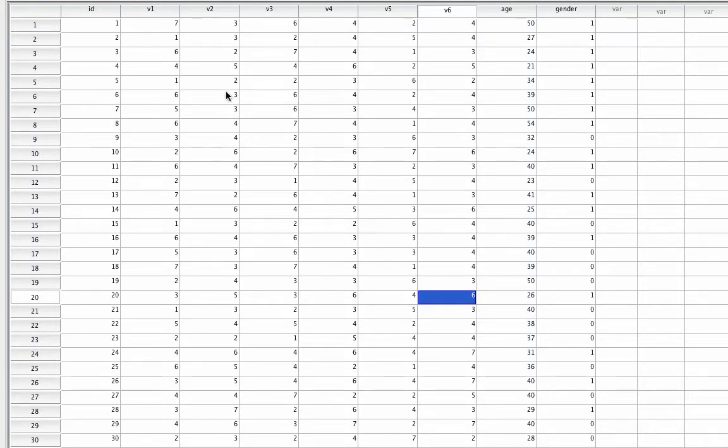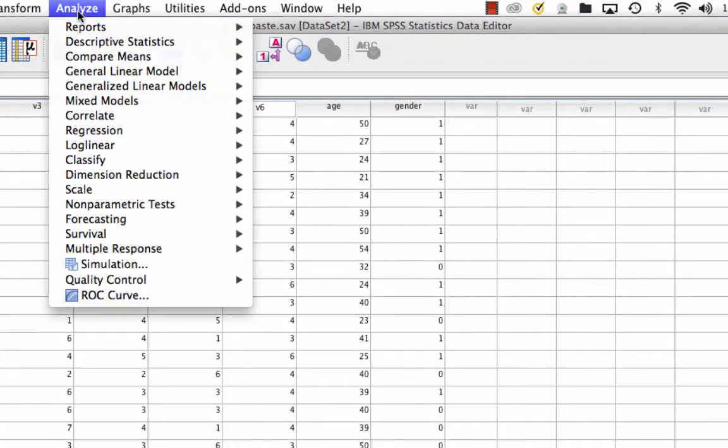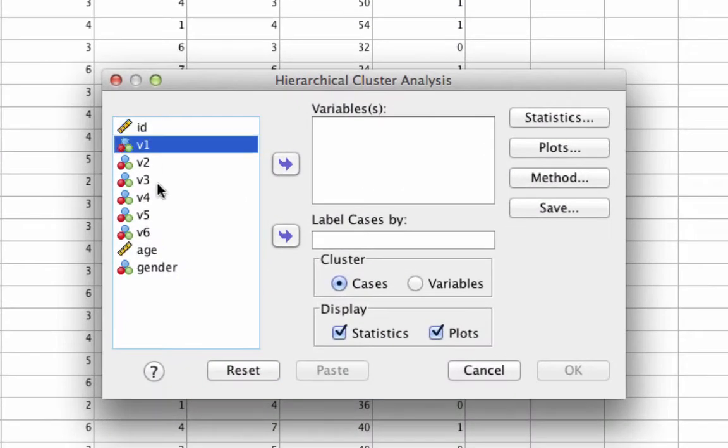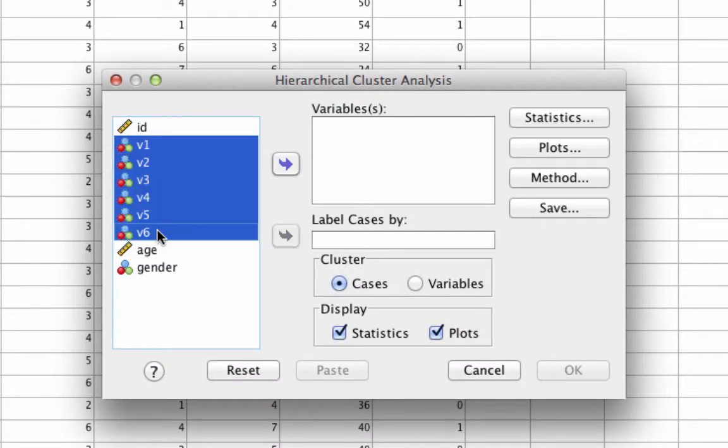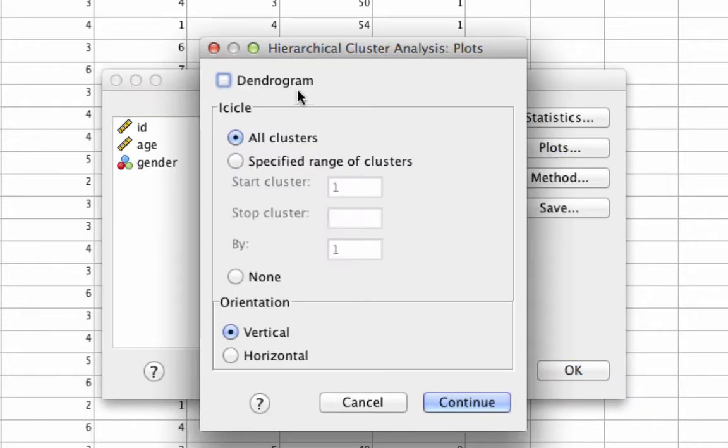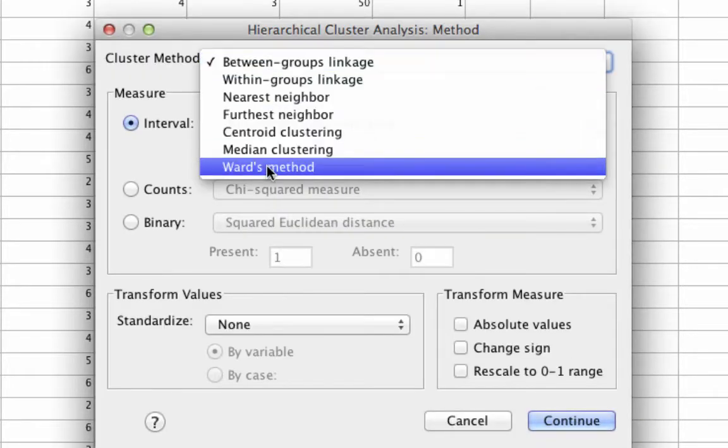We've got a number of variables and some demographic information. The first thing in order to determine the number of clusters that we need is we want to run the hierarchical cluster analysis. So we go to analyze, classify, hierarchical cluster. We include just the six attitudinal variables because that's what we're clustering on. We don't include age and gender and we certainly don't include the ID number. So we put those in variables.